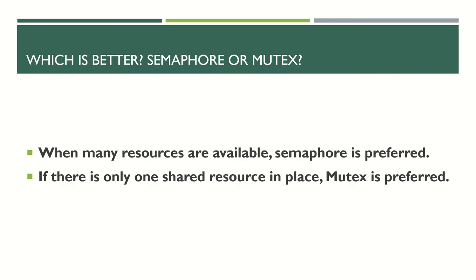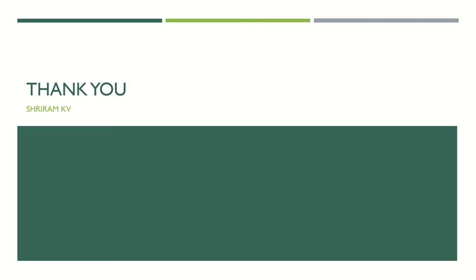Which is better — semaphore or mutex? When there are many resources and many processes, use semaphore. When there is only one shared resource, use mutex. In this session we differentiated semaphore and mutex, went through the technicalities of their differences, and explained with simple examples. Thank you for following the channel consistently. If you have specific queries or requests, type in the comments. If you like the channel, please subscribe and refer it to your friends.